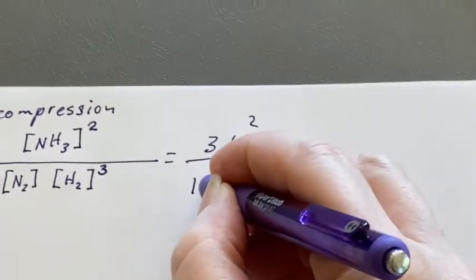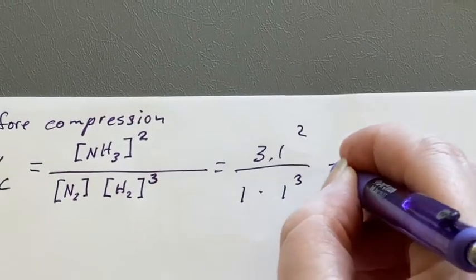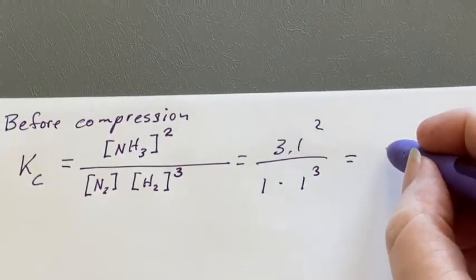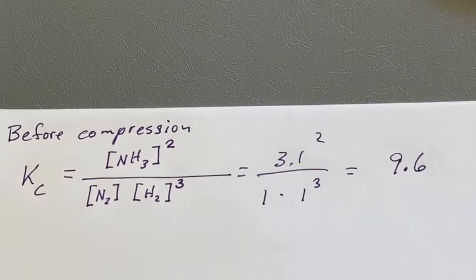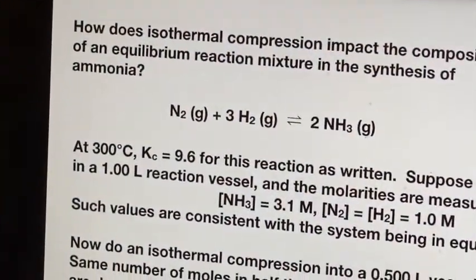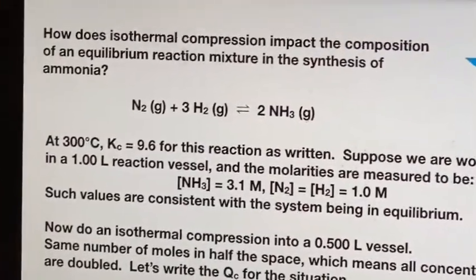So if we put in the numbers that we've been given, we would get 3.1 squared, and then this would be 1, and then 1 cubed. When you round back to just two sig figs, that's going to give you 9.6. So yes, we've confirmed what was said here, that it's consistent with it being in equilibrium.